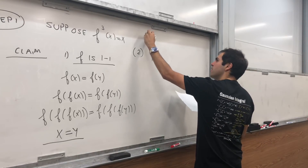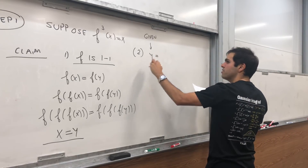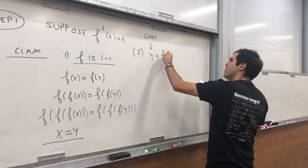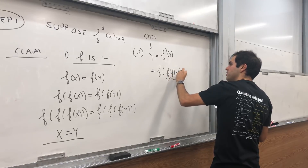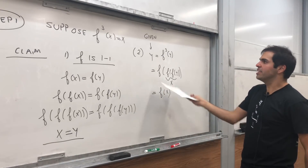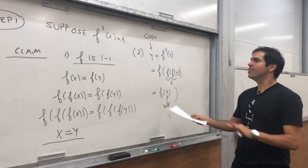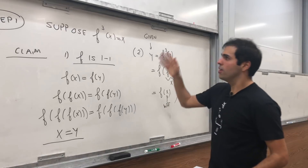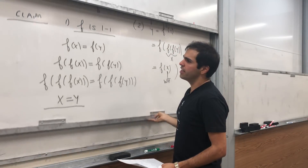And f is also onto — though we won't really need this today. That's because for any given y, we want x such that y = f(x). Since f³(y) = y, we have y = f(f(f(y))), so x = f(f(y)) works. But as I said, we only really need the one-to-one property. And now comes the next step: we know f is one-to-one, so f must be either increasing or decreasing.